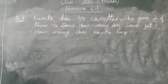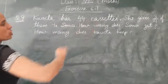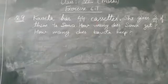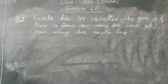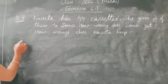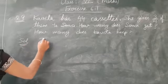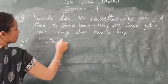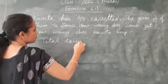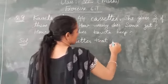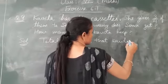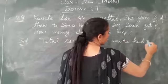Total number is 44. She has given some fraction of that to Sonia. So we have to find how many cassettes Sonia is getting. Total cassettes that Kavita had are 44.